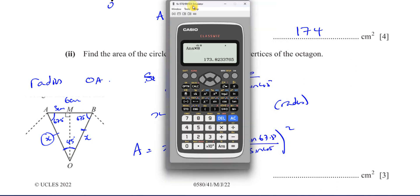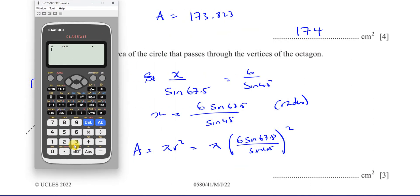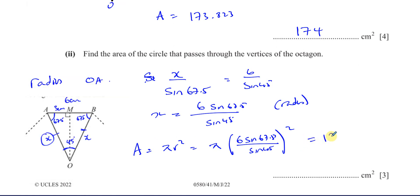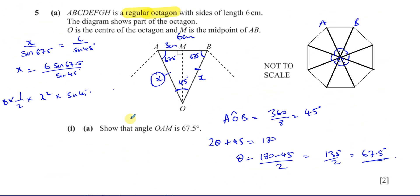So the area is π times (6 × sin(67.5) / sin(45)) squared. That gives 193.069, so the area is 193 cm² to 3 significant figures. Of course the circle's area is larger than the octagon's because the circle includes the regions outside the octagon but inside the circumscribed circle.